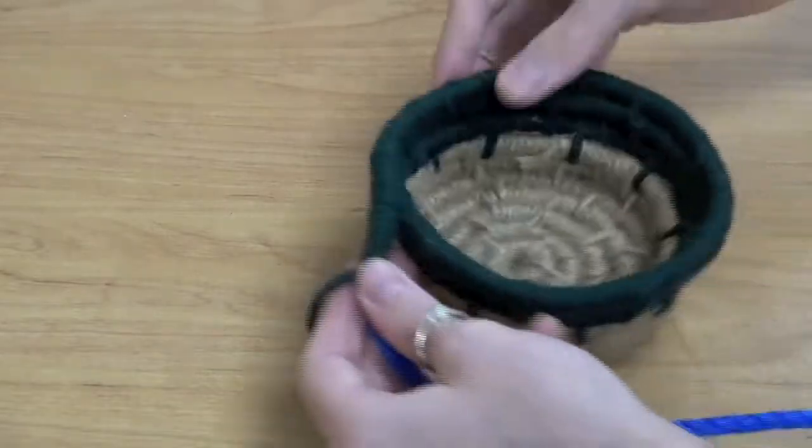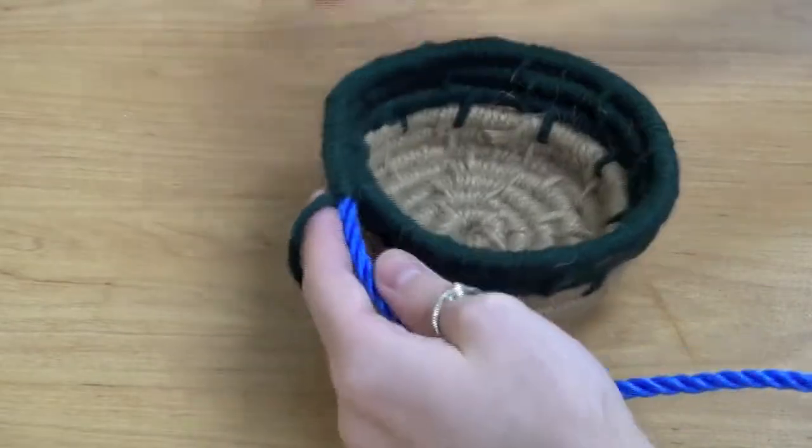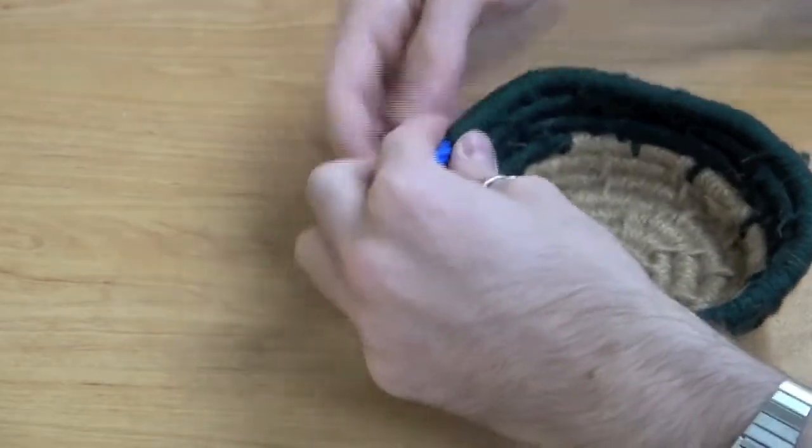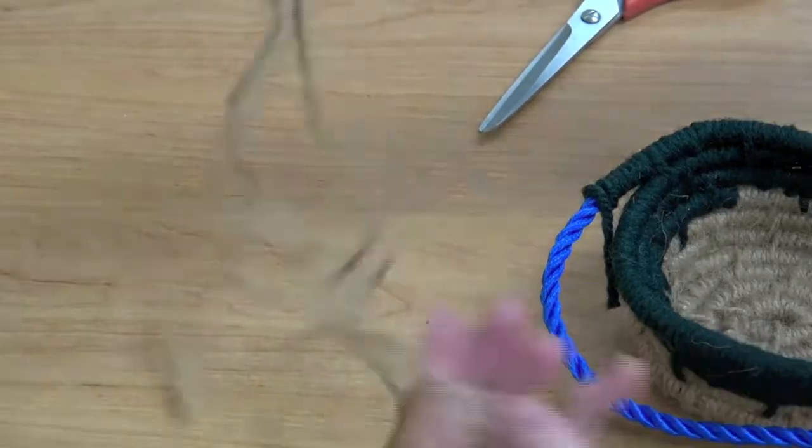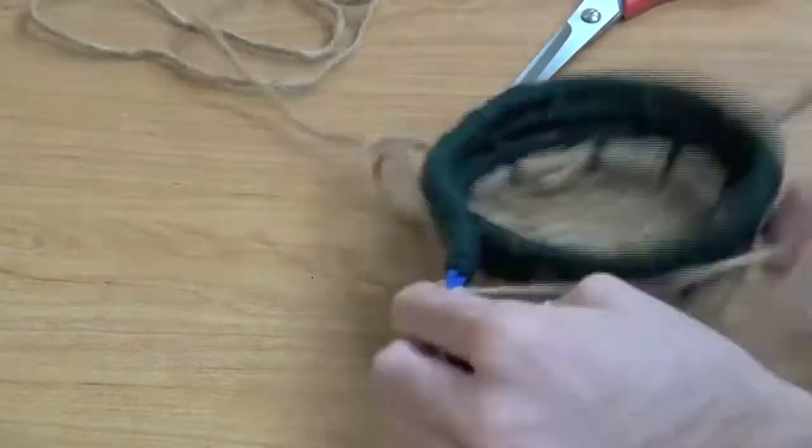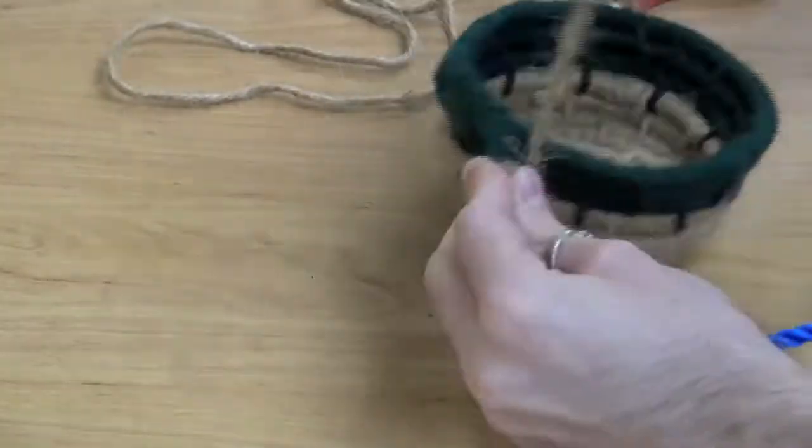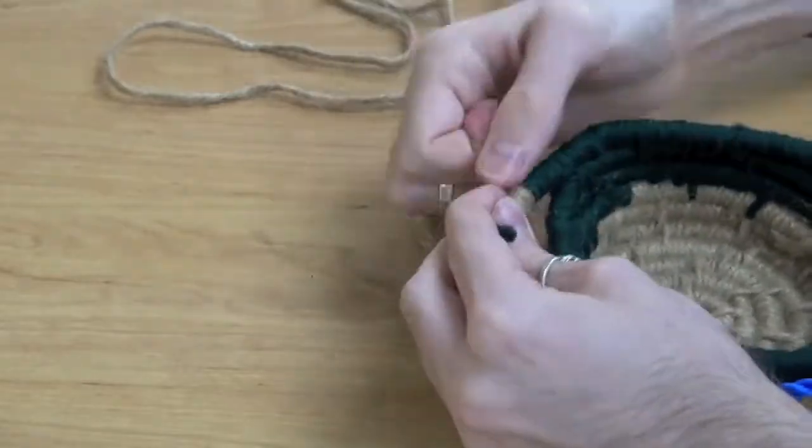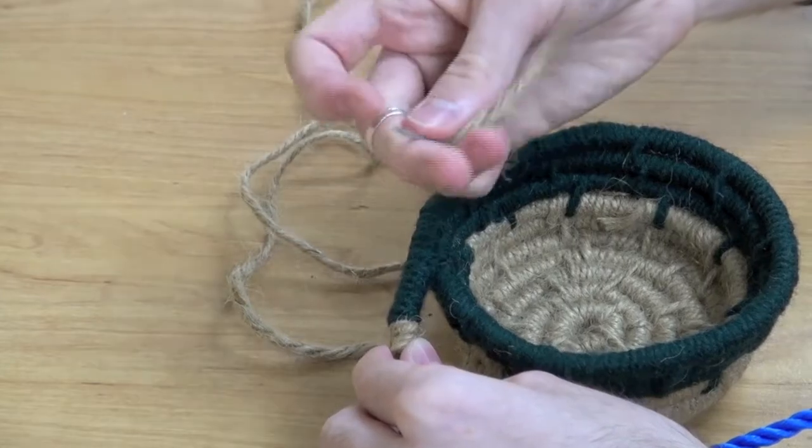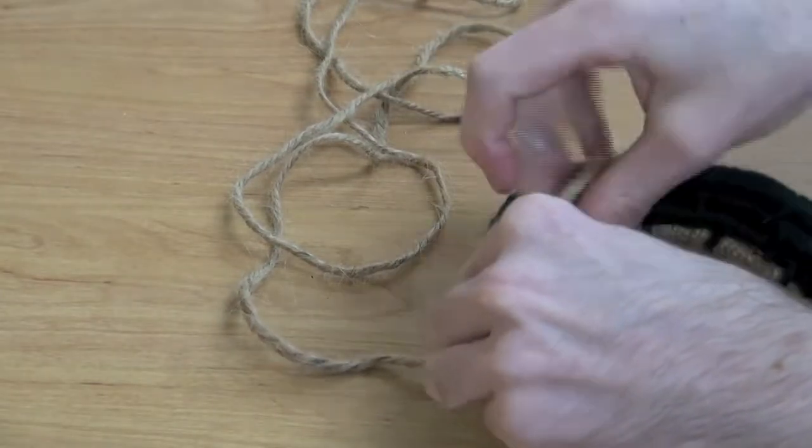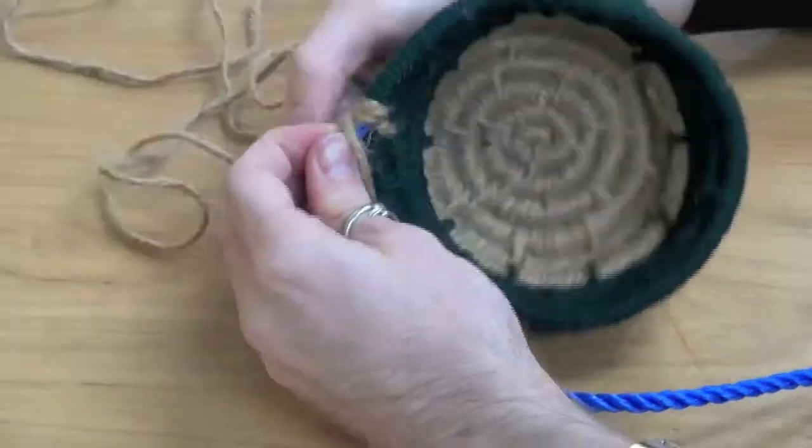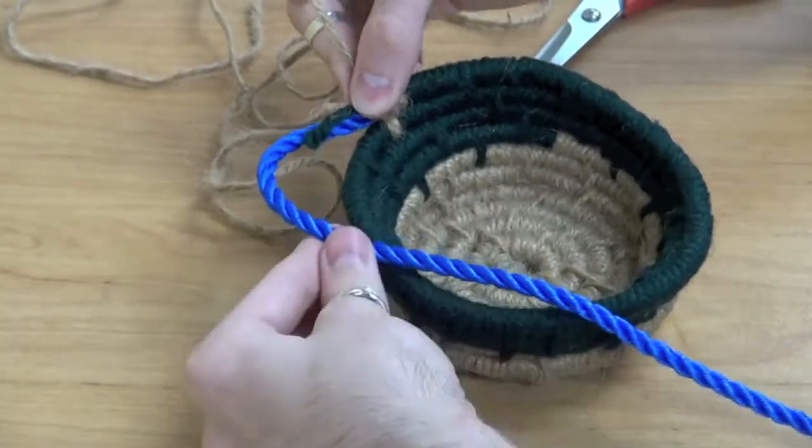Once you've created a bowl that you think you're satisfied with, here we're going to create two little handles for our basket. So we're going to cut off our excess, take off the needle, put the needle on another piece of string and return back to the twine. Here I'm going to wrap around three times just to make sure that it's secure and then pull my needle through the previous coiled row.